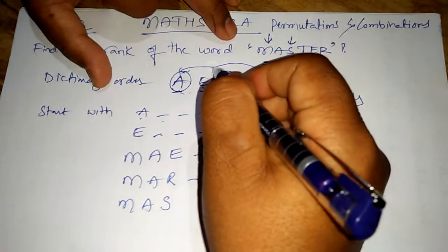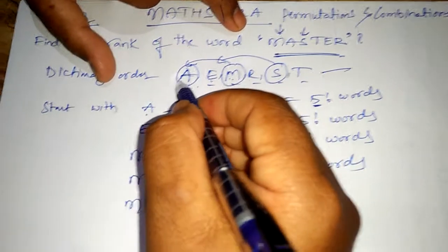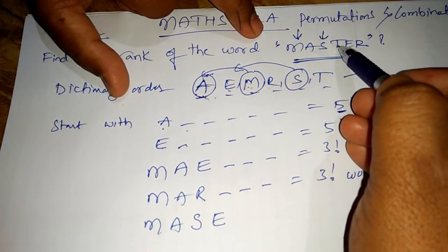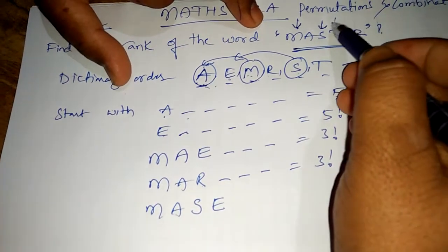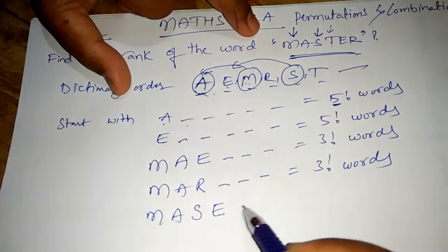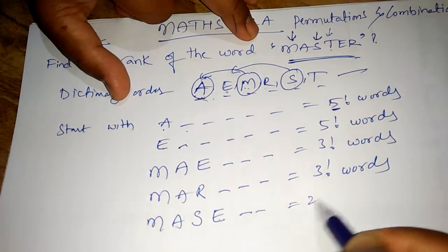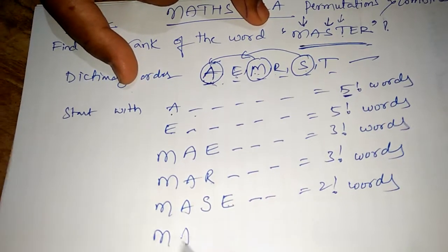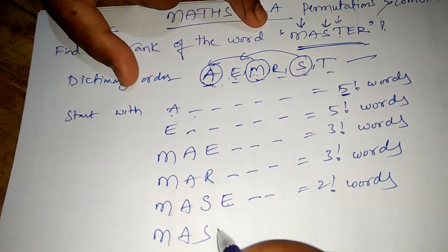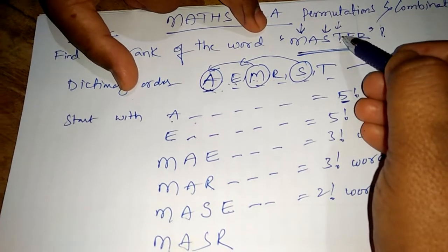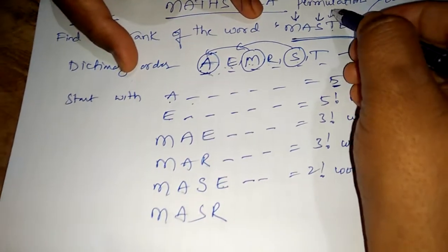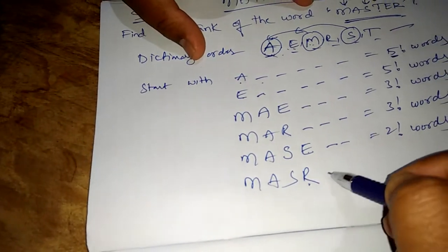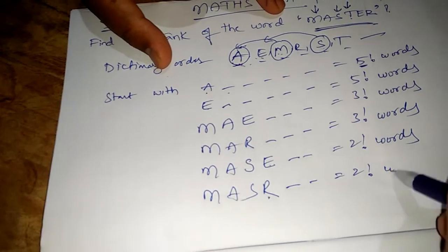After R, S matches our required letter, so we write S and go to the dictionary order for the fourth position. A is already used, so the next is E — E does not match our fourth letter T. We leave two gaps: 2! words starting with MASE. The next is R — R also does not match T, so 2! words starting with MASR.